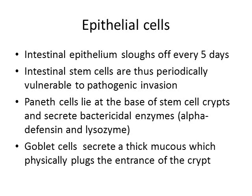Intestinal epithelium is constantly regenerating itself, about every five days, and then sloughs off. Intestinal stem cells underlying the epithelium are periodically exposed when the epithelium sloughs off and are then vulnerable to pathogen invasion. We have a defense mechanism called the Paneth cell, which lies at the base of these stem cell crypts. Paneth cells secrete antibacterial enzymes such as alpha-defensin and lysozyme, while goblet cells secrete a thick mucus plug at the entrance of the stem cell crypt to physically protect the stem cells.